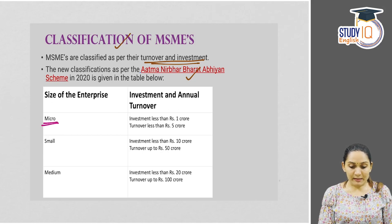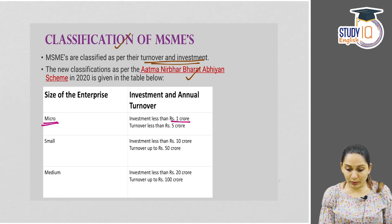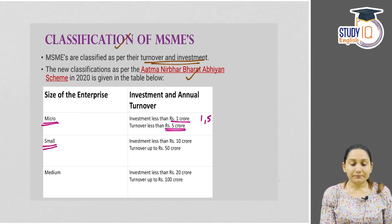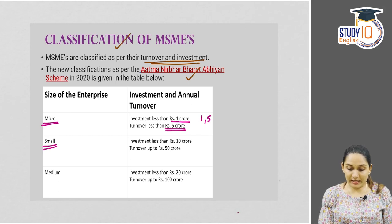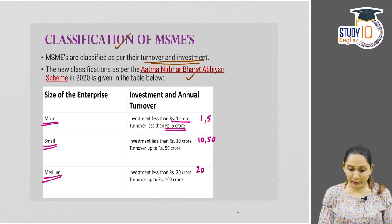For micro enterprises, both investment and turnover are taken as criteria. Investment less than 1 crore and turnover less than 5 crore. For small enterprises, investment is less than 10 crore and turnover is up to 50 crore. For medium enterprises, investment is up to 20 crore and turnover up to 100 crore.